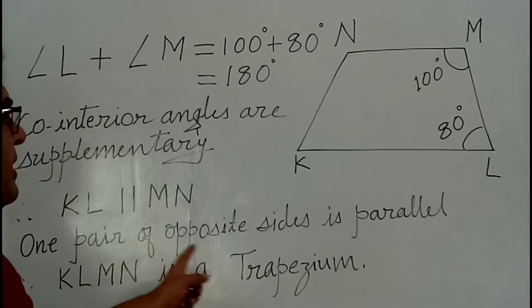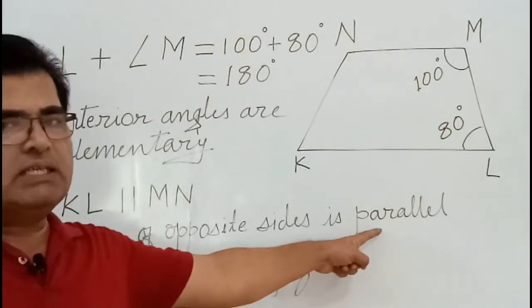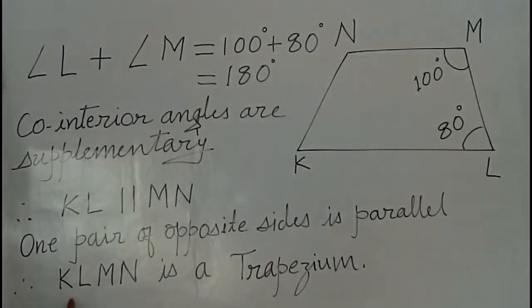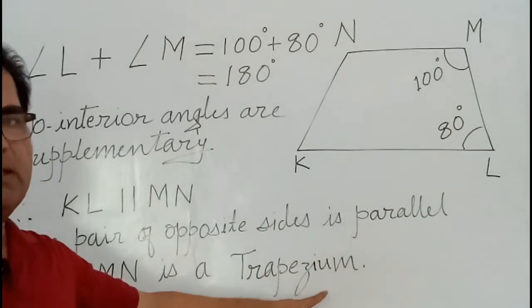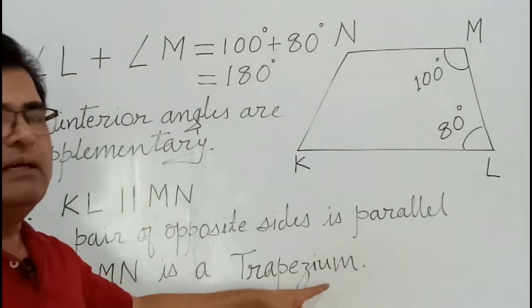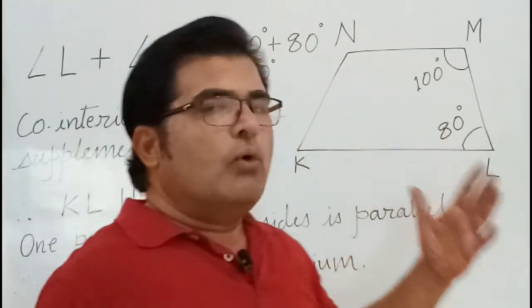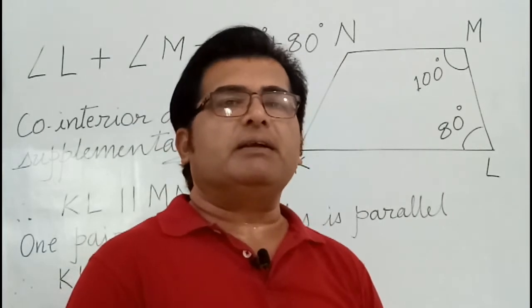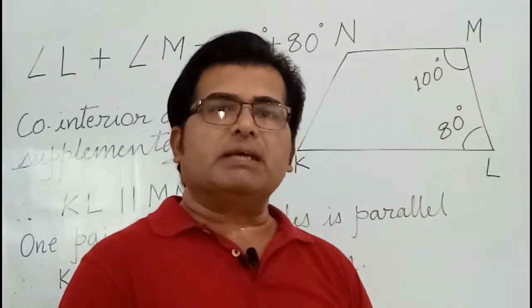In a quadrilateral, when one pair of opposite sides is parallel, then KLMN is a trapezium. The parallel sides are KL and MN. If you prove co-interior angles are supplementary, then two lines have to be parallel.